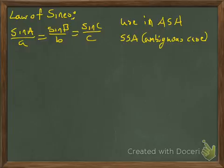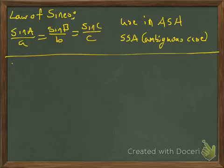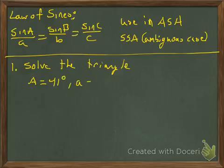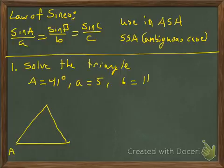We're going to look mostly at the ambiguous case and explore what's going on with that, and then we'll do a couple examples of the law of cosines. So let's start out — they're just going to ask us to solve the triangle, which means we want to find all the angles and all the sides. They don't tell us it's a right triangle, so we can't make that assumption. Angle A is 41 degrees, side a is 5, and side b is 11. We'll draw a generic triangle and put that information in, then use the law of sines.